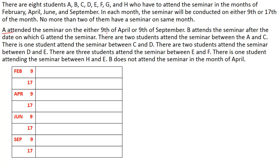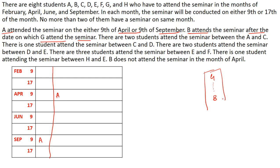The first clue: A attended the seminar on 9th April or 9th September. So two possibilities — A can be at 9th September or at 9th April. The next clue: B attends the seminar after the date on which G attends the seminar. So B will be attending after G, but we don't know where B and G are placed yet. Also, it is not mentioned immediately after, so B can be immediately after G or later.